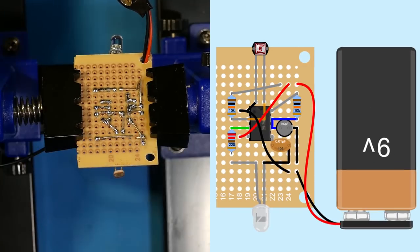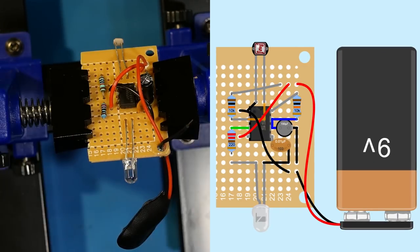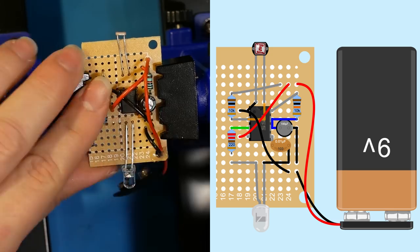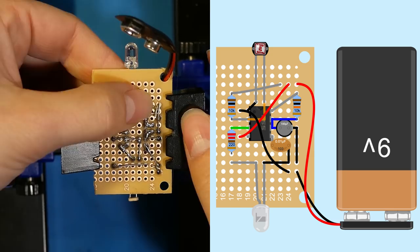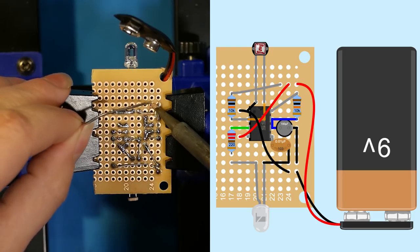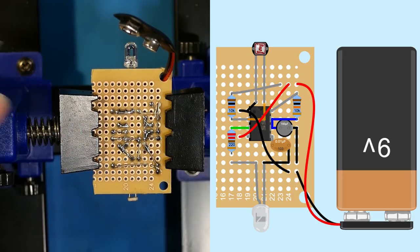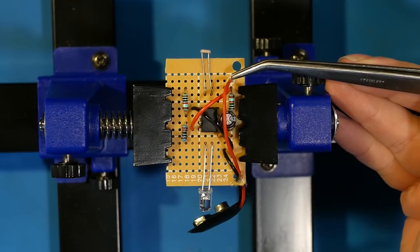Last is adding the 9-volt battery snap. To help keep it secure, I'll first thread it through the corner hole of the perfboard and hot glue it there in place. The red and black wires get trimmed and connect to the VCC and ground clusters.